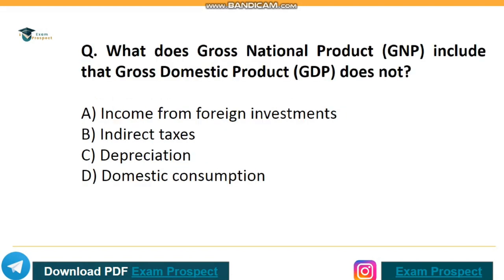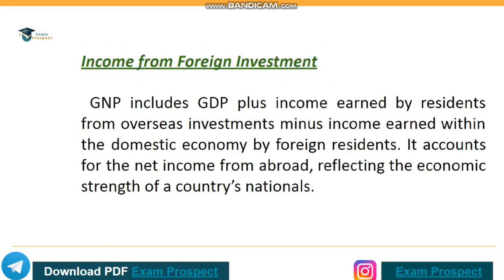What does Gross National Product include that Gross Domestic Product does not? Correct answer is option A: income from foreign investment. GNP includes GDP plus income earned by residents from overseas investment, minus income earned within the domestic economy by foreign residents. It accounts for the net income from abroad, reflecting the economic strength of a country's nationals.